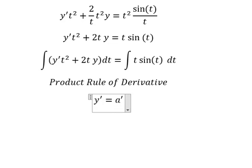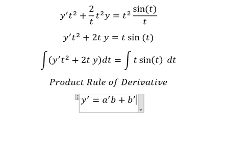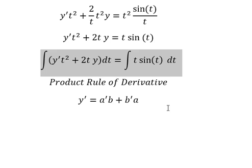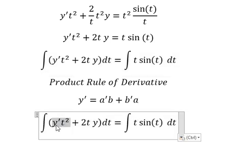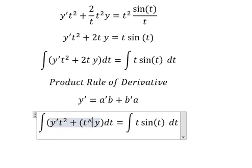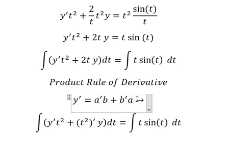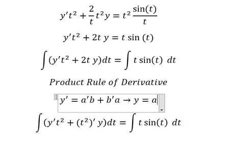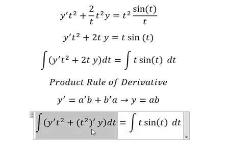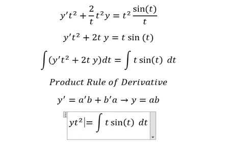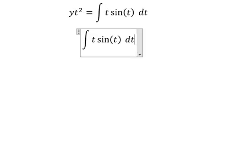Next we can use the product rule of the differential. We have: the derivative of (A·B) equals the first derivative of A multiplied by B, plus the first derivative of B multiplied by A. Applying this, the integration of that expression gives us y equals A·B, so the integration gives us y·T squared. Now we need to focus on the right-hand side, and we can use integration by parts.